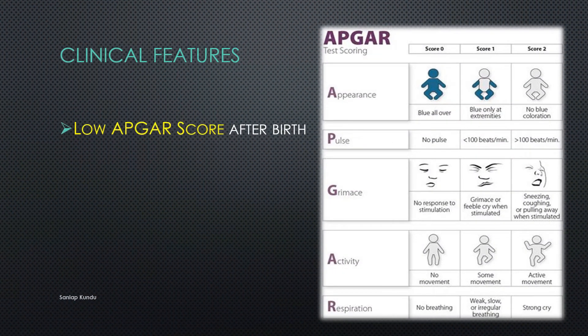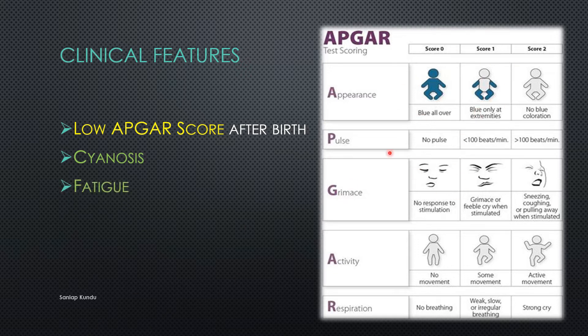The clinical features include a low Apgar score after birth — I already made a video on Apgar score, click the 'i' button to see that. Second is hypercyanosis. If there is a low Apgar score, there is a high chance of CO2 accumulation in the body, which causes cyanosis.